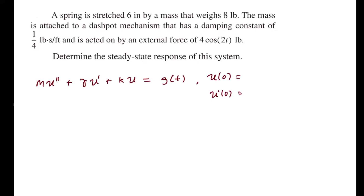For this problem it seems like we're not given the initial conditions, so you can cross those off. Let's figure out what our coefficients m, gamma, and k are. Gamma is the damping constant, which is given to us in the problem, so that is immediate. We know gamma is one-fourth — no need to change the units.